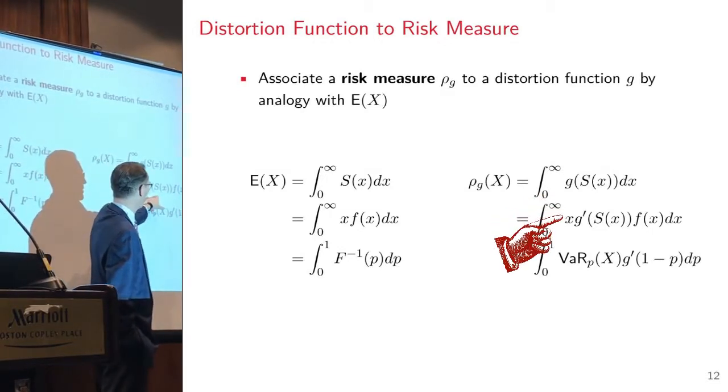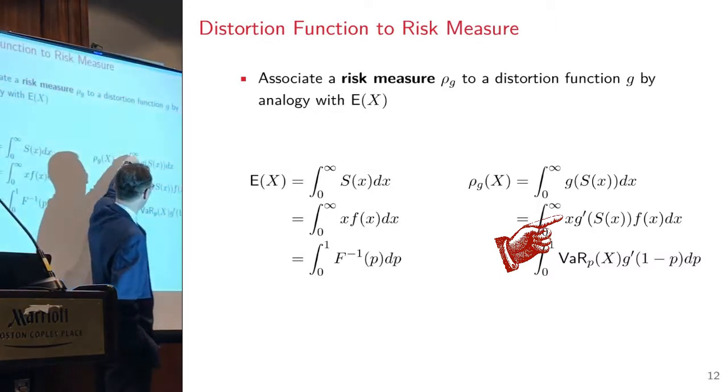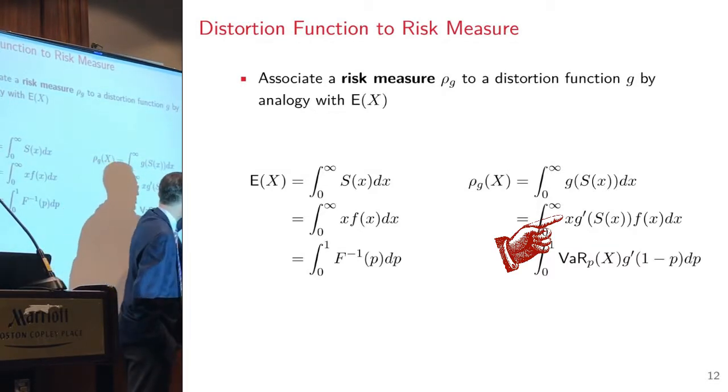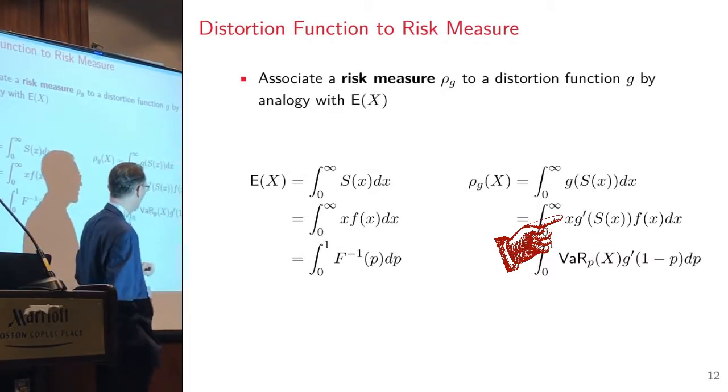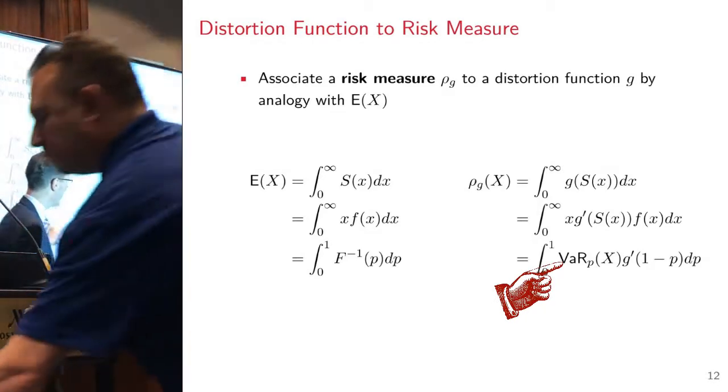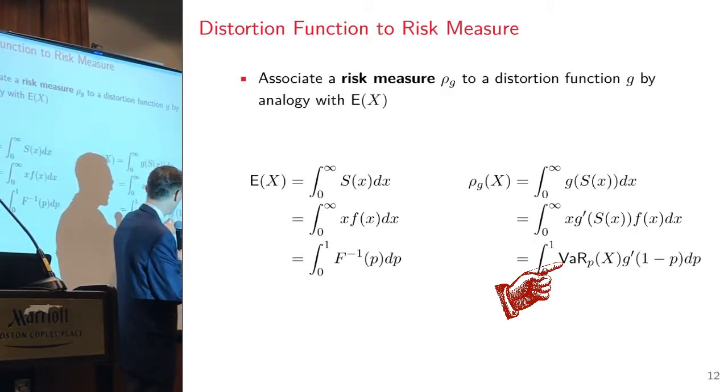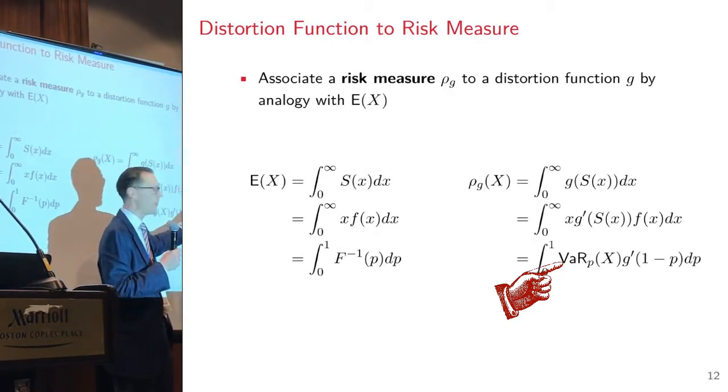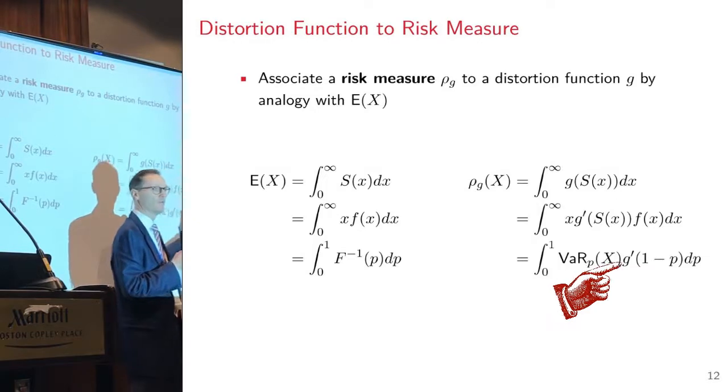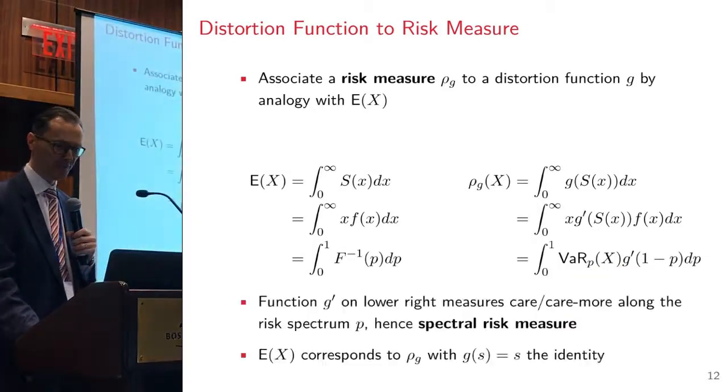If you do integration by parts, this becomes my adjusted probability and this is my outcome. This becomes my adjusted view of risk. This is my measure of the CAS or CASMO function. When we get to the CAS and CASMO function, this is what it's going to be. It's going to be the derivative of this distortion function g that we have.